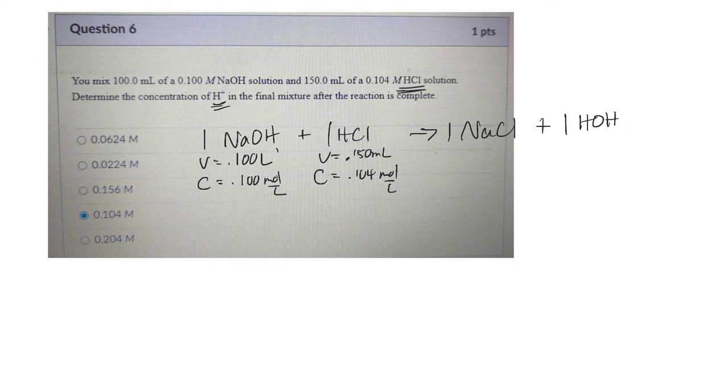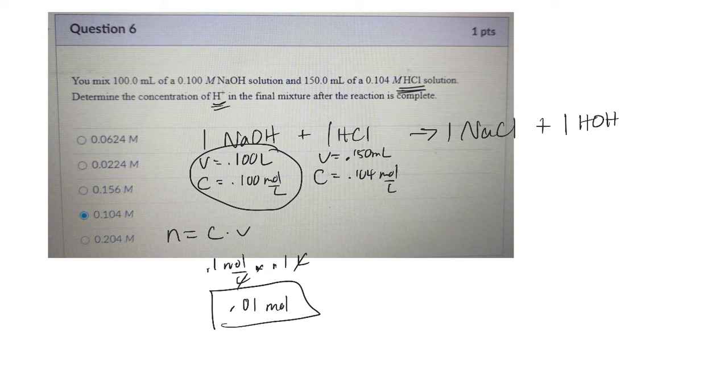But what I could do is from each of these, I could determine moles. So moles is C times V. So 0.1 moles per liter times 0.1 liters. So that would be 0.01 moles. That's how many moles I have of sodium hydroxide.